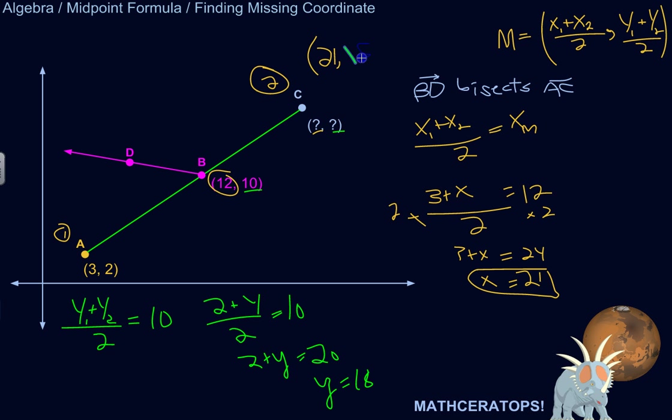So the coordinates of this endpoint are (21, 18). We figured that out by starting with the other endpoint of the segment and knowing the midpoint, which allowed us to find these missing coordinates.